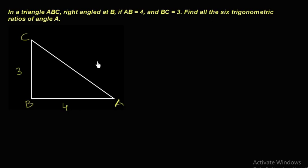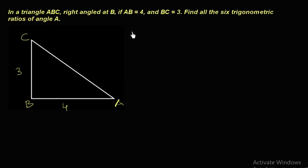Let us see how to find the side AC. We have already learned about the Pythagorean theorem. According to the Pythagorean theorem, the sum of the squares of two sides equals the square of the hypotenuse side, since this is a right angle triangle.